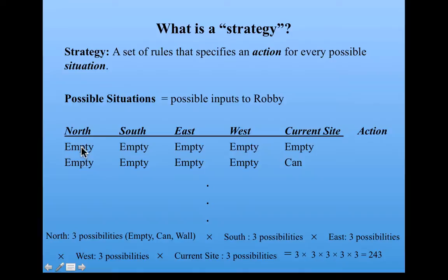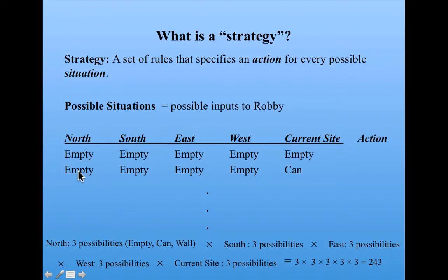there's three possibilities that I could fill in for North: Empty, can, and wall. Robbie could find himself with an empty square to the North, with a square that has a can in it, or with a wall. So those are the three possibilities for North. And South has the same three possibilities, and so on.